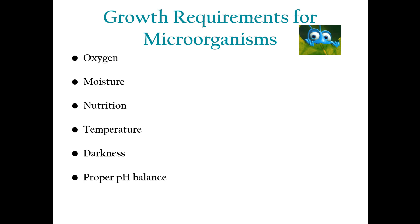Sixth is proper pH balance: microorganisms need an appropriate pH level to survive. Some thrive in acidic conditions while others prefer neutral or alkaline environments. Understanding these requirements helps us create strategies to prevent infection by disrupting the ideal conditions for growth.